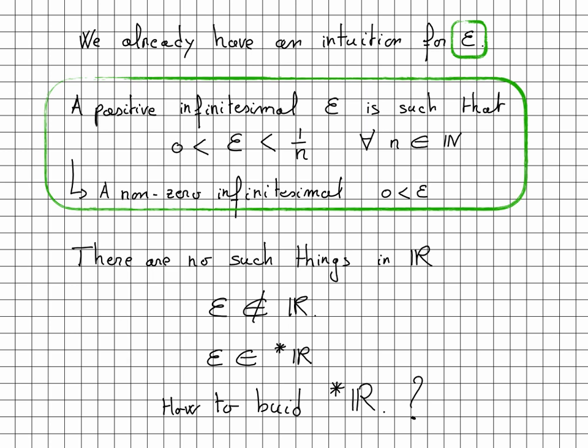It is clear that there is no such number in R. If epsilon exists, it is part of something bigger, we call it star R. The question is, how to build this star R, and what is it?